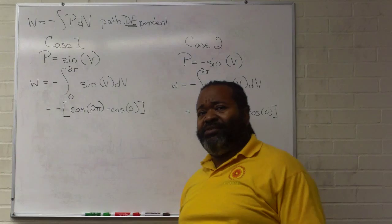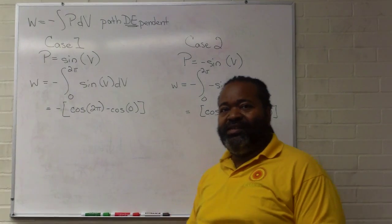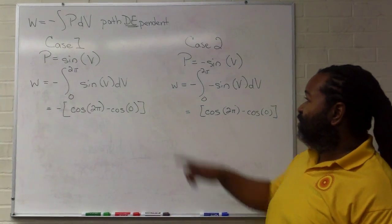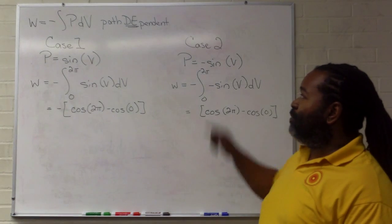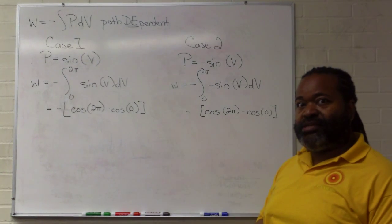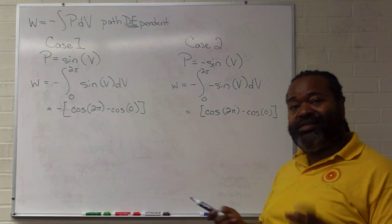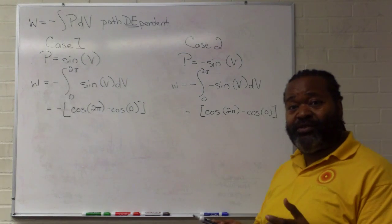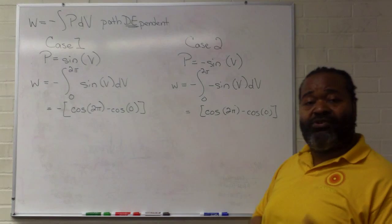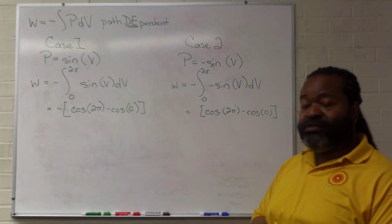At this point you might say, well, you said it was all path dependent and we have two different paths and we're getting the same answer. What may be useful then is to take the graphical approach and consider the argument that this integral corresponds to the area under the curve.